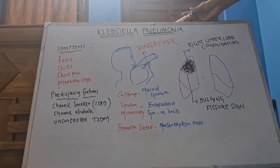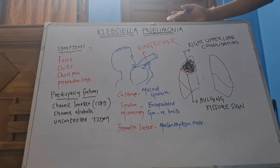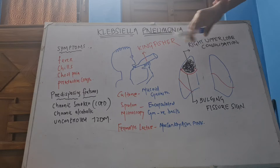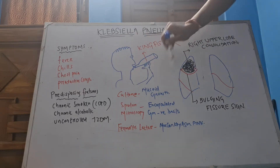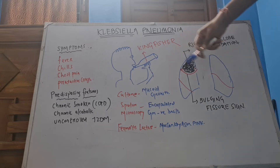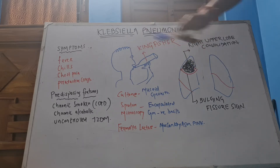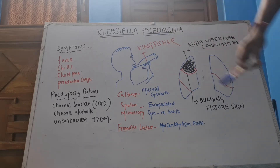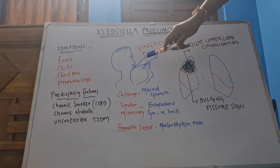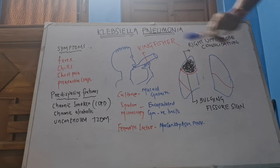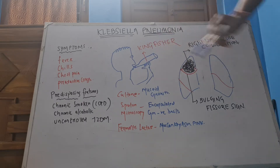Today's topic is Klebsiella pneumonia. I will be presenting it like a story, so remember this picture — this is Vijay Malya, and he is holding a king's mission. This is an alcoholic guy, and elderly alcoholic patients have more predisposition for having Klebsiella pneumonia.